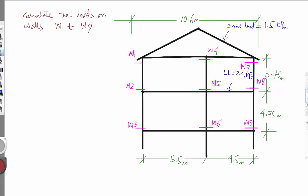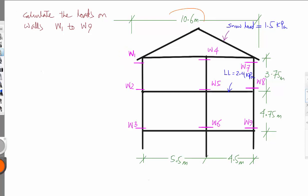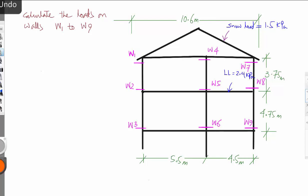In this session we'll do a calculation of loads on these walls to design the walls later on. We'll do a calculation of W1 through W9. This dimension is 10.6 meters, for example, and it includes an overhang of 300 millimeters on each side. So let's start — you can use this as a template.